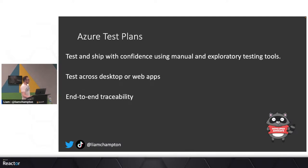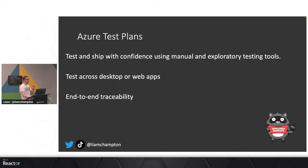Then we have test plans — how do you want to test your code and lay out all the different increments it needs to pass to work efficiently in the wild? You set out a test plan, and I'll show you each of these parts in Azure in a moment. You can test across different web apps or desktops to see how it performs in different environments, and it gives you end-to-end traceability. So you may have a little bug when a user clicks a close button — having a test plan to make sure that passes is really important.